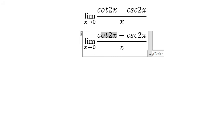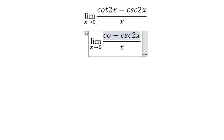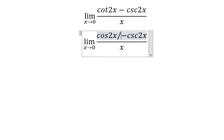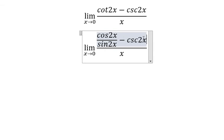About cotangent 2x, we need to change it to cosine 2x over sine 2x. Cosecant of 2x we change to 1 over sine 2x.